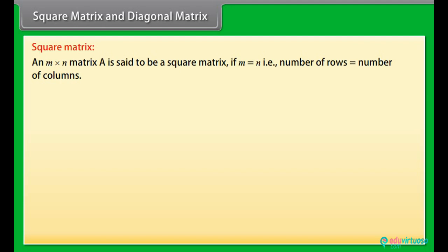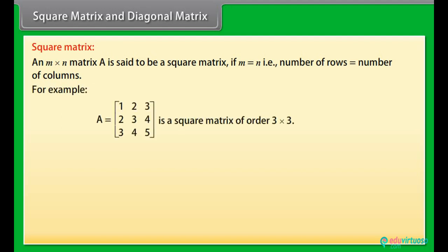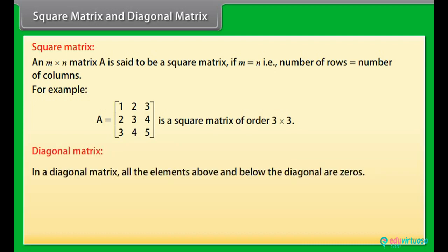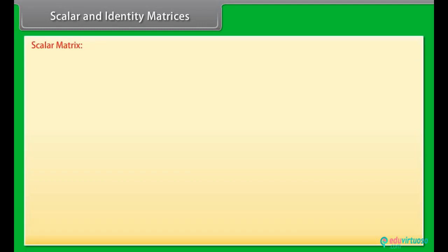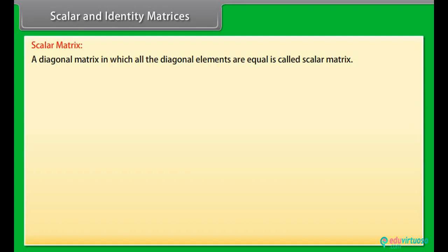Square matrix: An m by n matrix A is said to be a square matrix if m equals n, that is the number of rows equals the number of columns. For example, A is a square matrix of order 3 by 3. Diagonal matrix: In a diagonal matrix, all the elements above and below the diagonal are zeros.